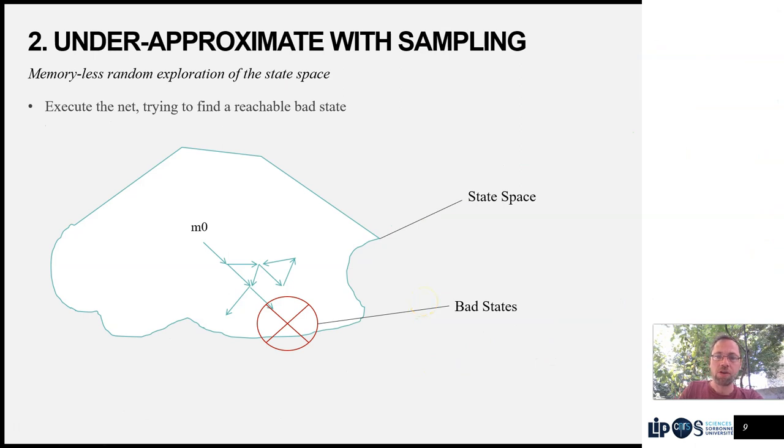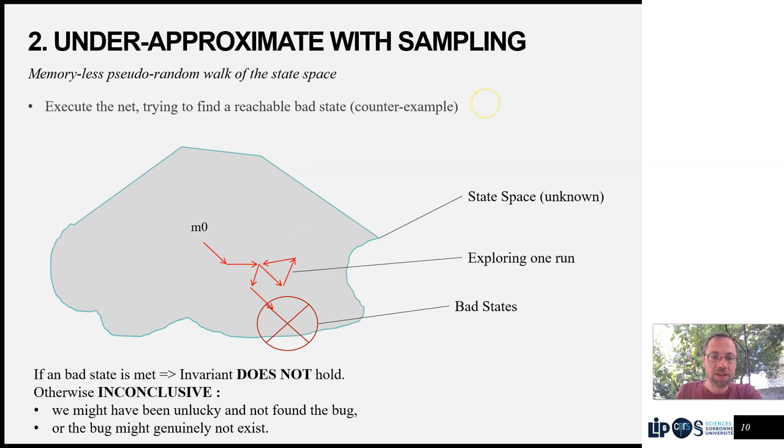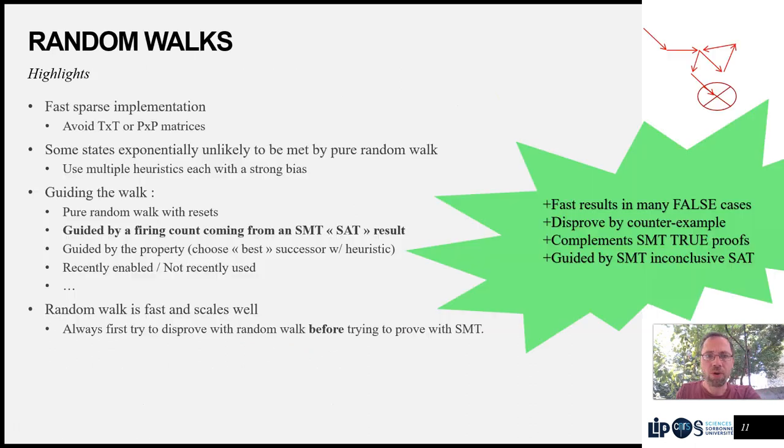The second approach is under-approximation. For this, we use sampling. Basically, we execute the net and run through it. If we find a counter-example, the invariant does not hold. Otherwise, we don't really know. We use a very fast sparse implementation and a set of heuristics that try to explore different parts of the state space.